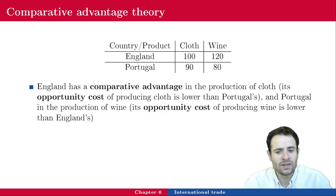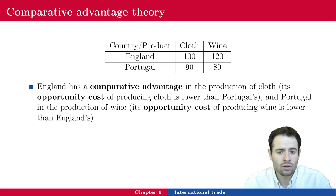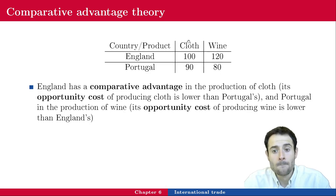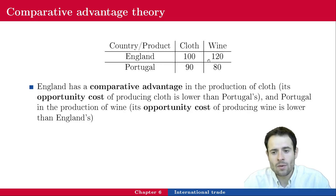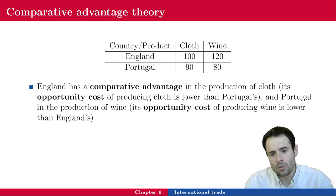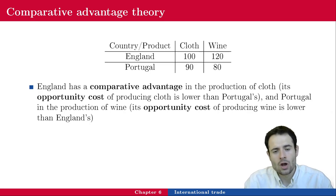So England has a comparative advantage in cloth because it does not give up as much wine. For Portugal it is the other way around: if it takes 80 hours to make wine, Portugal gives up less than one unit of cloth; whereas England, deciding to make a unit of wine, gives up more than one unit of cloth. Despite having an absolute advantage in both goods, Portugal only has one comparative advantage, and England has another.